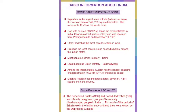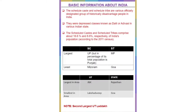Some facts about Scheduled Castes (SCs) and Scheduled Tribes (STs): They are officially designated groups of historically disadvantaged people in India, known as Dalits or Adivasis. SCs and STs comprise about 16.6% and 8.6% respectively of India's population according to the 2011 census. They are largely concentrated in Uttar Pradesh and Madhya Pradesh, and least in Mizoram and Goa. The largest union territory is Jammu and Kashmir, the smallest is Lakshadweep. The largest state is Rajasthan and the smallest state is Goa. The second largest union territory is Ladakh.